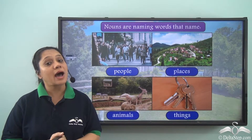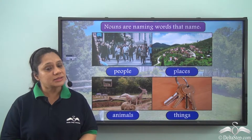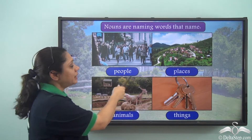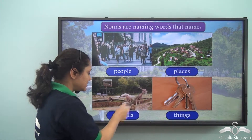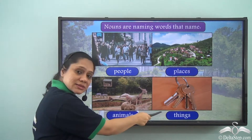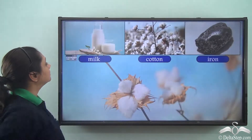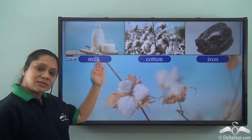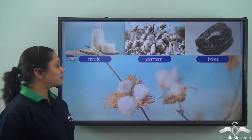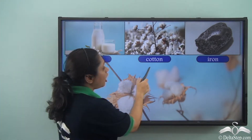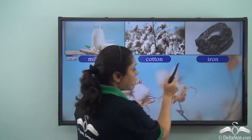We know that nouns are naming words and they name people, places, animals and things. Now let us look at the words given here: milk, cotton, iron.